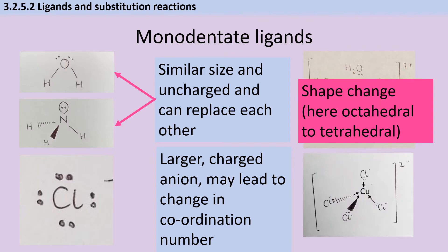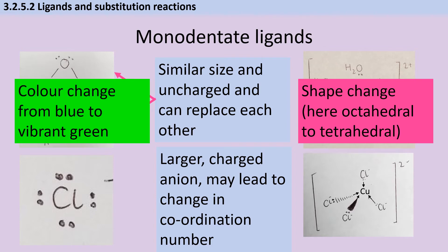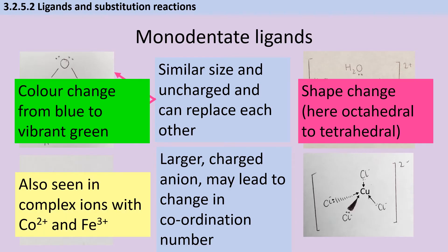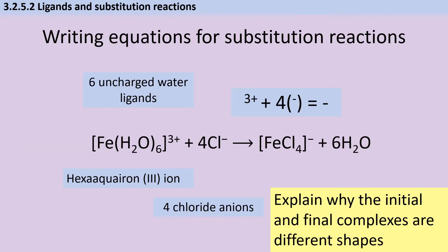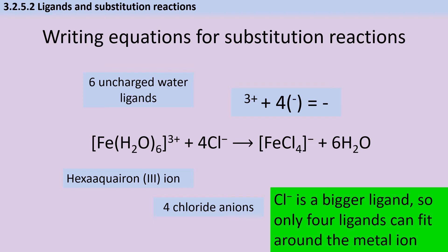It also changes the overall shape of this complex from octahedral to tetrahedral, and this is accompanied by a color change from blue to a vibrant green. Similar reactions also occur with complex ions containing cobalt and iron. You may need to write equations for the substitution reactions and explain how the different size of the ions leads to a change in shape. Chloride is a bigger ligand, so only four ligands can fit around the metal ion.